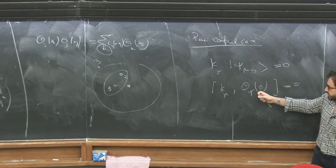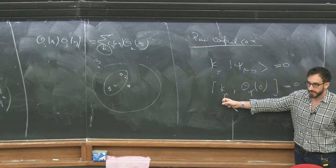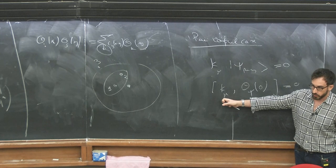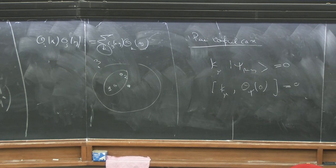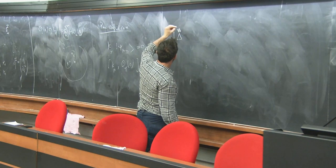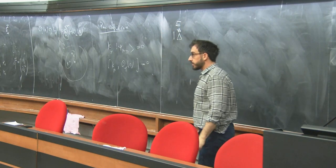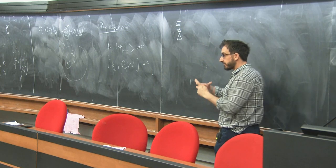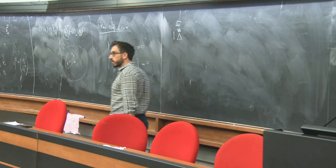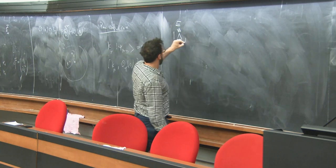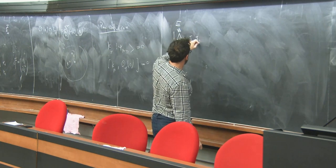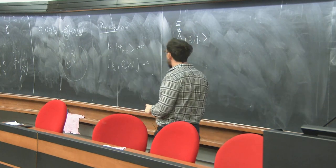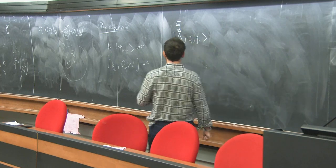The operator version of the statement is that the operator at the origin commutes with the special conformal transformation. It's necessary to put this at the origin because if you are away from the origin, there is an orbital piece of the action of the special conformal generator which will not vanish. Given this definition, we classify representations in terms of the conformal dimension delta, which I interchangeably also denote by the energy E, since we quantize the theory in radial quantization.